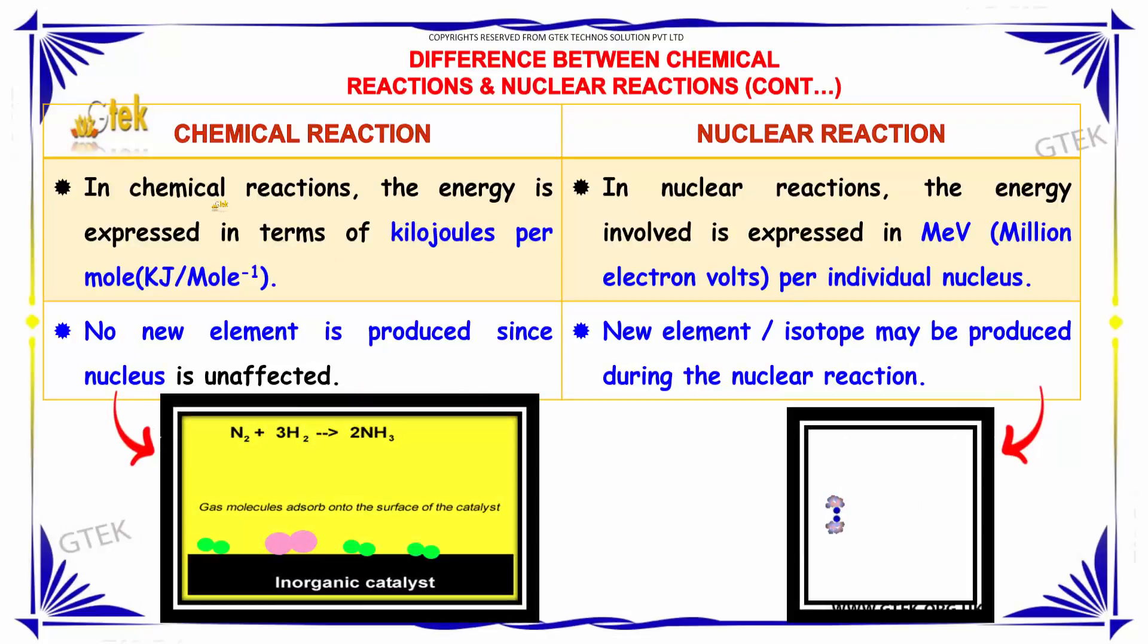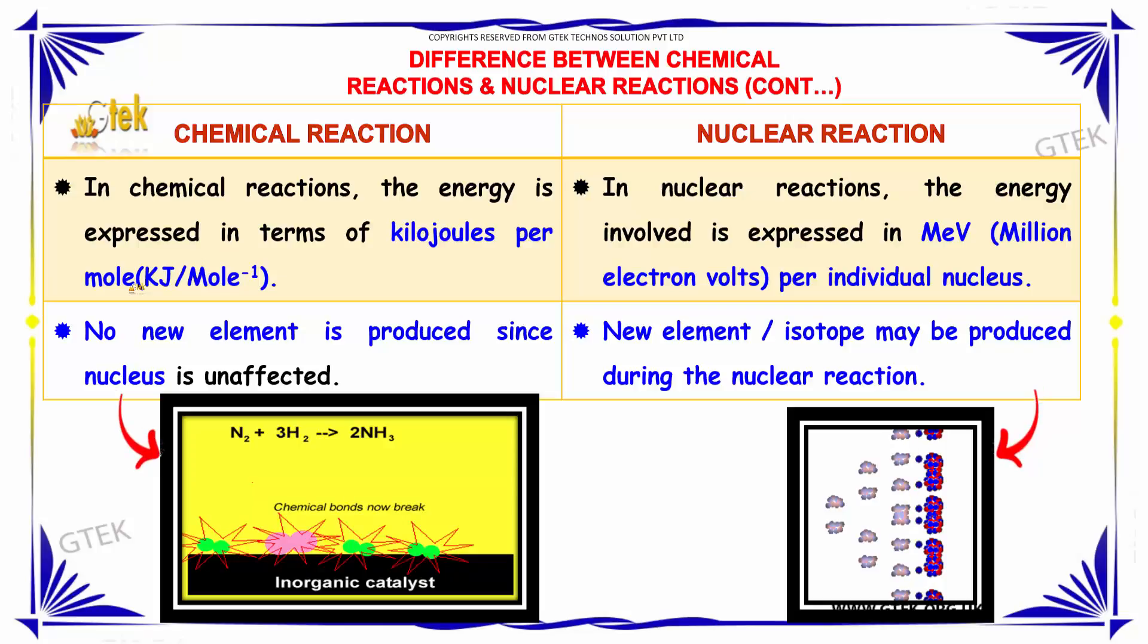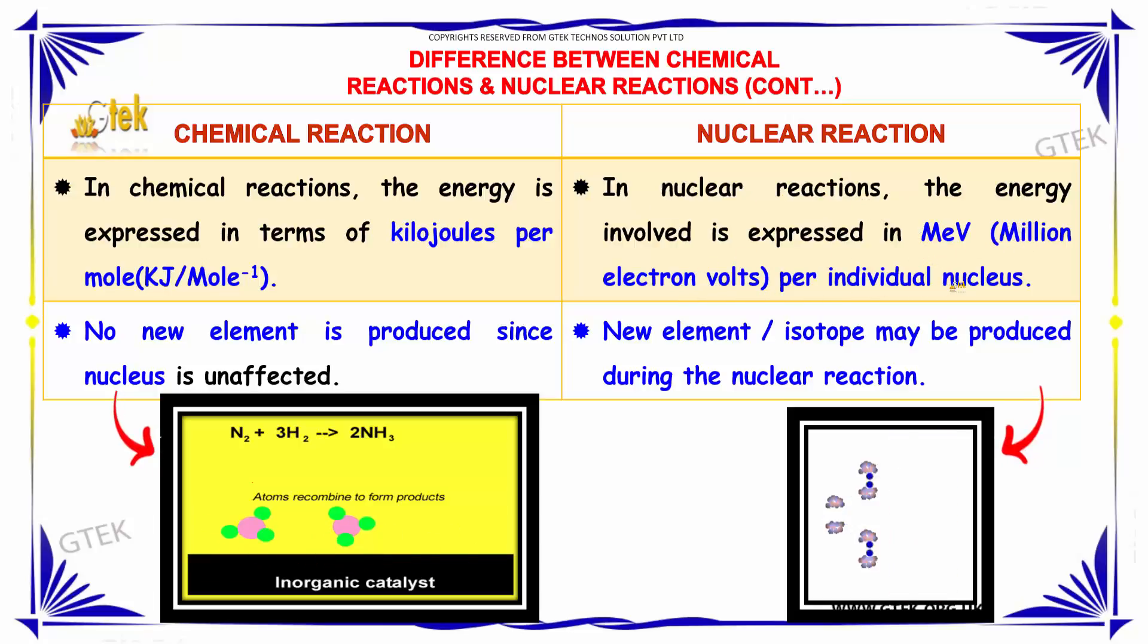In chemical reaction, the energy is expressed in terms of kilojoules per mole. No new element is produced since nucleus is unaffected. Here new elements will be produced, isotopes can be produced. In nuclear reaction, the energy involved is expressed in million electron volts per individual nucleus.